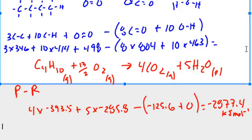So now if I go ahead and crunch these numbers, I come up with a value of negative 5386 kilojoules per mole.